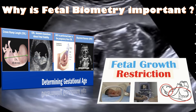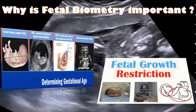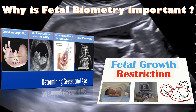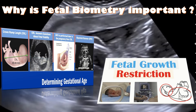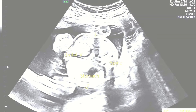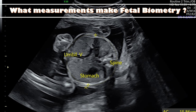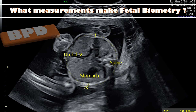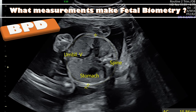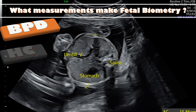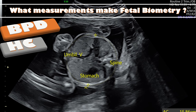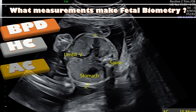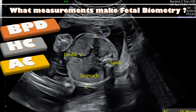Secondly, it helps to detect fetal growth restriction, which could be due to an underlying health condition in the birth parent, issues with the placenta, or a congenital abnormality in the fetus. The different parameters of fetal biometry include: first, the biparietal diameter, which is the diameter of the head; and the head circumference, which is the length going around the head.